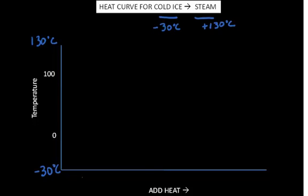For ice to melt, you have to get to the melting temperature, so you'd have to start adding heat. Imagine you're on a hot plate — you'd have to start adding heat. We're going to do this for 10 grams of ice. We're going to start with 10 grams of ice and move through this process until we end up with 10 grams of steam.